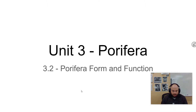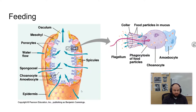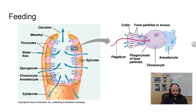In this video we're going to be looking at sponge form and function. Sponges are suspension filter feeders. They feed by collecting particles from the water — essentially the particles that just pass through their system. Water flows through the sponge from the outside through these pores, then through the body cavity, and out the top through an area called the osculum.